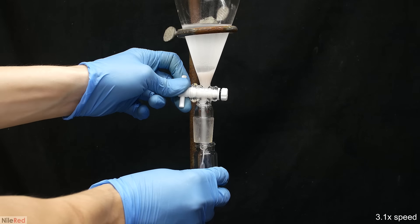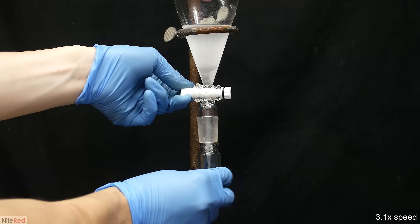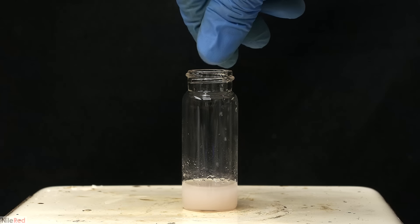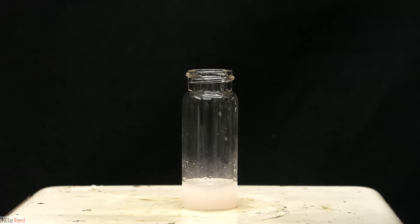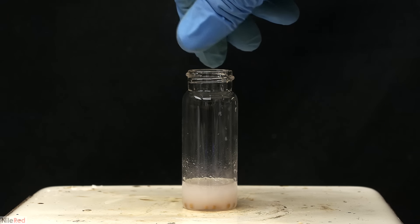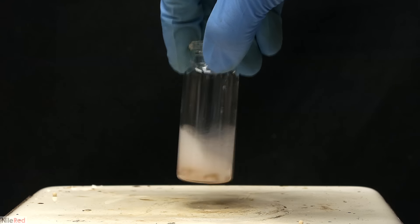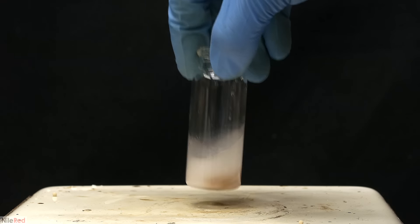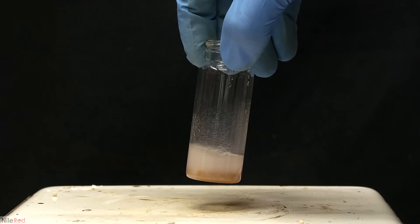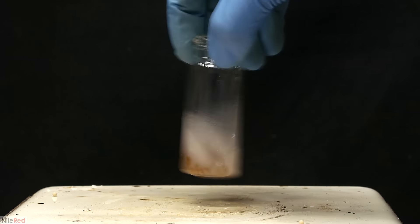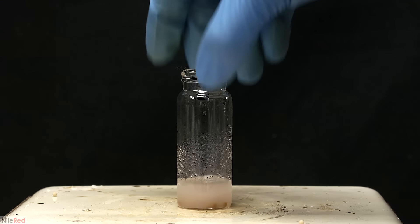Again, I wait for the layers to separate, and then the lower one is drained into a vial. It's very cloudy and wet with water, so to dry it up, I add some molecular sieves. It's also possible to use another drying agent, like magnesium sulfate. I swirled it around a little bit, but it was still a little bit cloudy, so I left it for a couple hours.